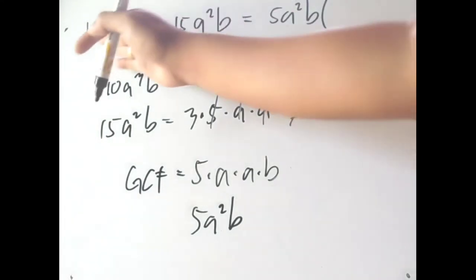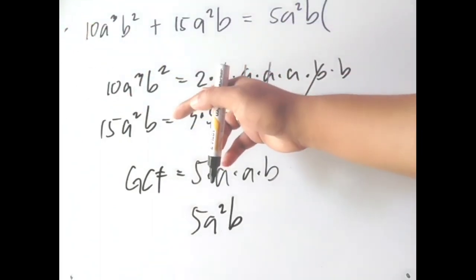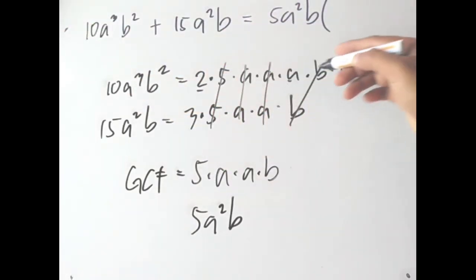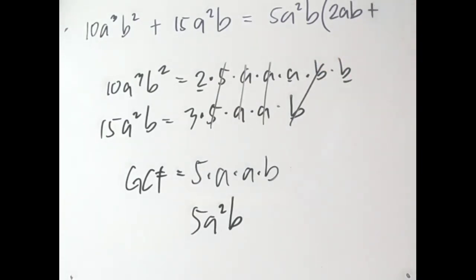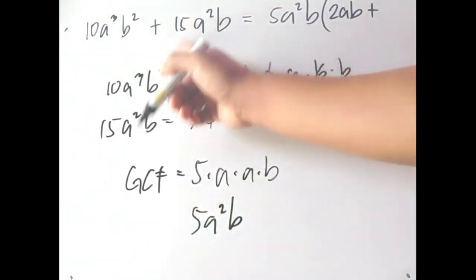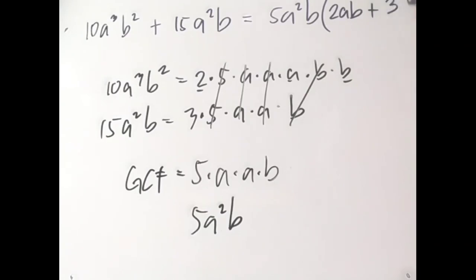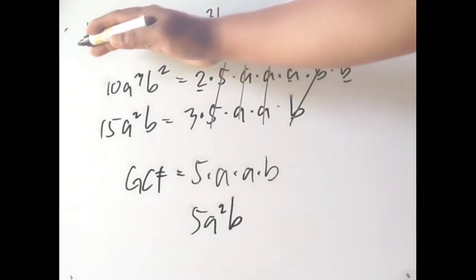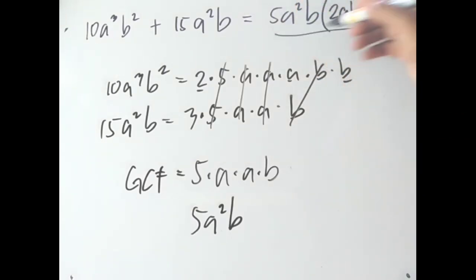The common factor of the two terms is 5a²b. Now find what remains: from 10a³b², after taking out 5a²b, what's left is 2 times a times b — giving 2ab. From 15a²b, after taking out 5a²b, what's left is 3. So the final factored answer is 5a²b(2ab + 3).